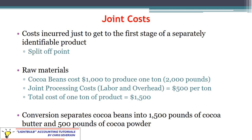Now we're going to talk about a topic known as joint costs. In this example, we have one product with joint costs we have to incur. After we process this product just a little bit, we get to a point where we can split it into two separate products. That point where we have two separately identifiable products is known as the split off point. These joint costs typically include raw materials plus some labor and overhead to get the raw material up to the split off point.